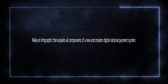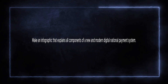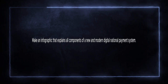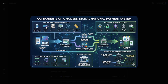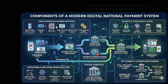Let's try an infographic that explains all components of a new and modern digital national payment system - that could happen very soon. Oh my god, look at what we received. All the fonts are correct. Mobile wallets, contactless cards, QR codes, payment scheme network, issuer bank, acquirer bank, tokenization, end-to-end encryption. Look at this - consumer pair. Out of this world.